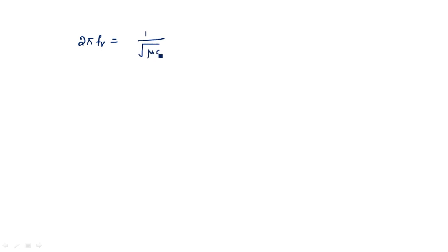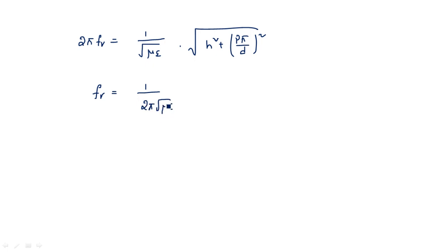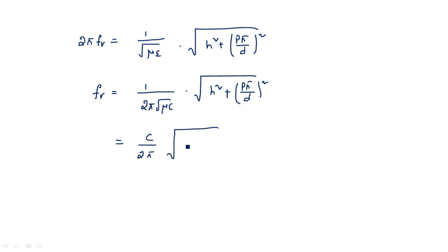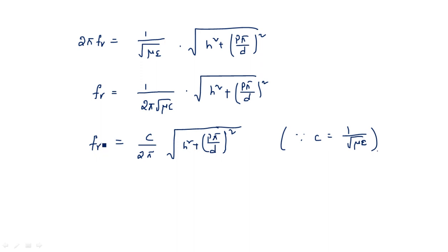Solving for the resonant frequency: fr = (1/2π√με) × √[h² + (pπ/d)²]. Since c = 1/√με, this simplifies to fr = (c/2π) × √[h² + (pπ/d)²]. This is the resonant frequency expression for the circular cavity resonator.